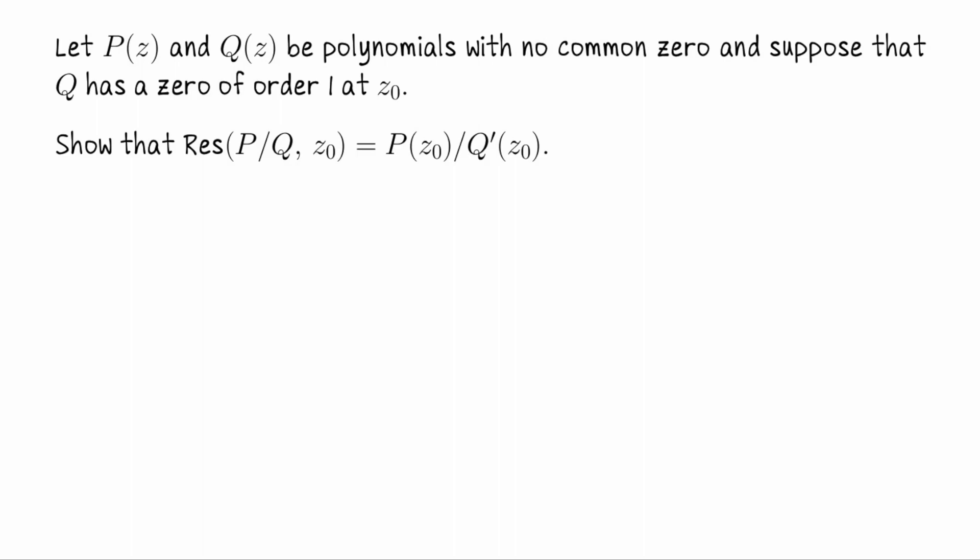So let me read through this result and then I'll rephrase it a little bit. Let P and Q be polynomials of the complex variable z with no common zero, and suppose that Q has a zero of order 1 at z₀, so Q has a simple zero at the complex number z₀. Show that the residue of the function which is P over Q at z₀ can be evaluated by doing P at z₀ divided by Q prime at z₀.